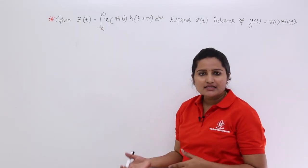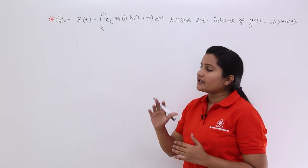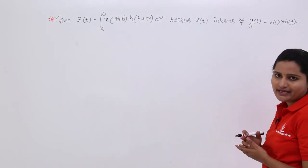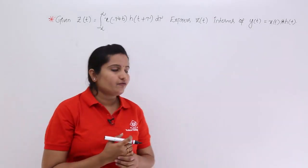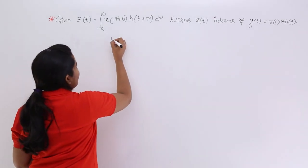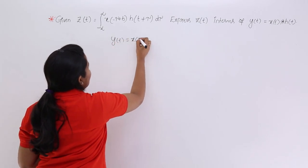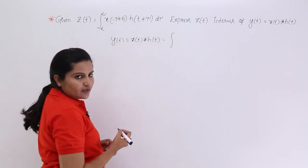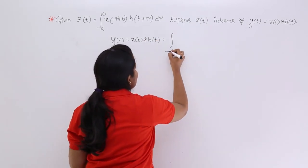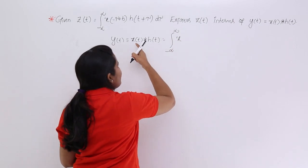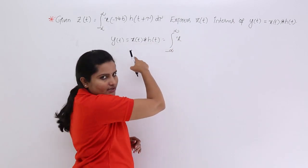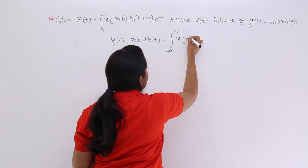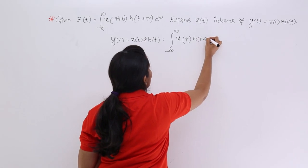If Z of t is like this, we need to represent Z of t in terms of Y of t, where Y of t is the convolution of X of t and H of t. Now I am going to write the formula. Y of t is equal to X of t convolution with H of t. We know the formula for convolution is the integral from minus infinity to infinity — we can fold and shift this signal. So I am considering X of tau, H of t minus tau, d tau.